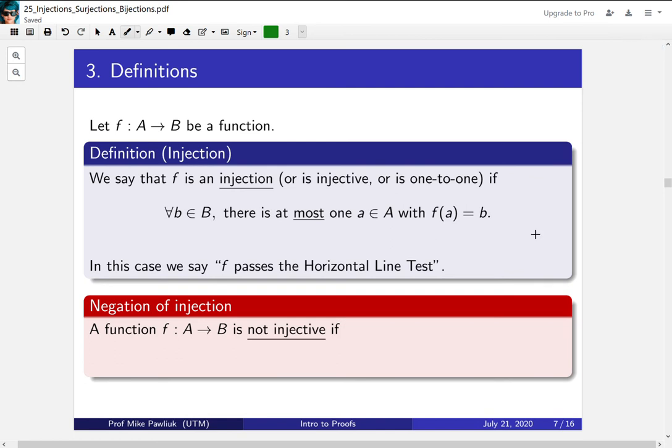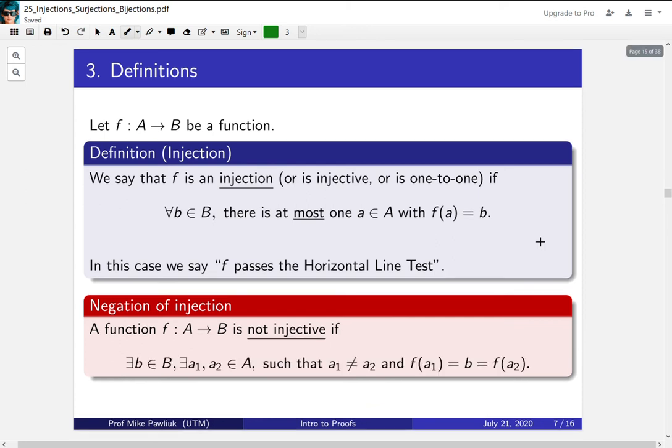Let's look at the negation of being an injection, because this is going to show up many times. Take a moment to negate this definition. The negation should say there exists a b, and there are two different things that give the same output. So there is something in the codomain, and there are two things in the domain that are different that give the same output.